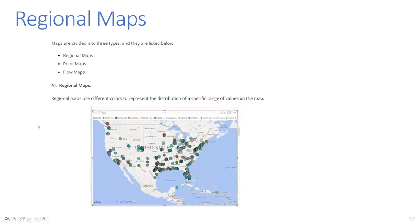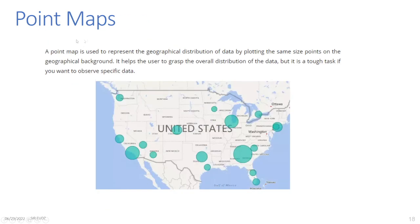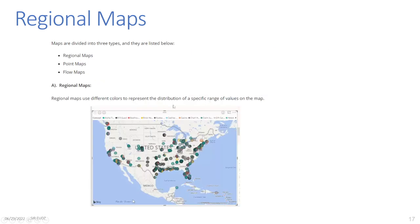Maps: Maps are divided into three types — regional maps, point maps, and flow maps. Regional maps use different colors to represent the distribution of a specific range of values on the map. Point maps represent the geographical distribution of data by plotting same-size points on a geographical background, helping users grasp the overall distribution of data, though it is difficult to observe specific data points. Point maps show overall distribution while regional maps focus on representing the distribution of a specific range of values.